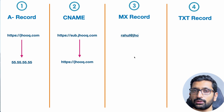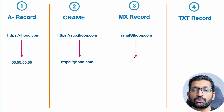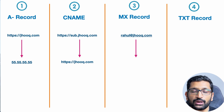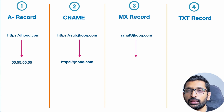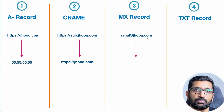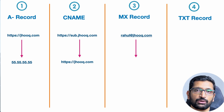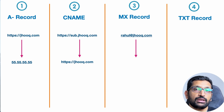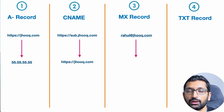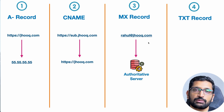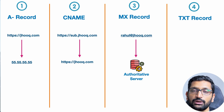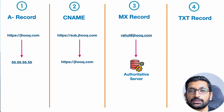The third in the list is the MX record, which is generally used for configuring your mail server settings. For example, if I want to create an email like rahul@jhook.com because I own that domain, I'll use the MX record for managing the email server settings. These MX records communicate to my authoritative server so that I can set up SMTP settings for sending and receiving mails.